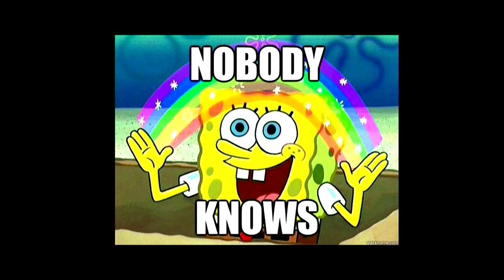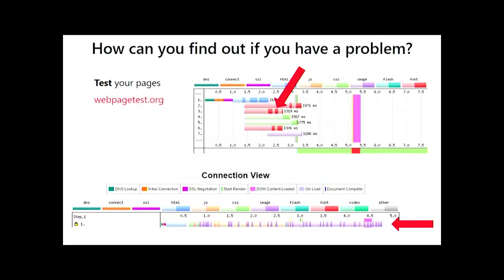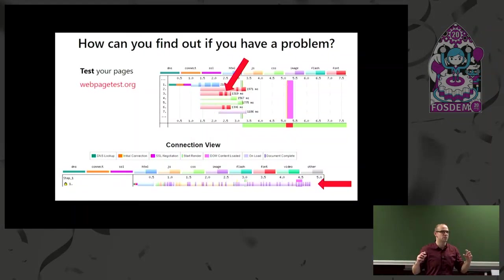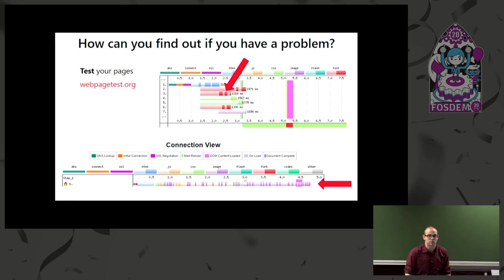How can you do this in practice? The best thing to do is first verify that you actually have a problem. You can use the WebPageTest tool for this — it will generate a nice waterfall. Since last year they started showing where exactly your HTTP/2 data is coming in for that specific resource. You can also collapse this waterfall into one connection view, which gives you a timeline that really gives you an overview of how things are coming in. If these don't match up with what you were expecting, then maybe you have a problem.